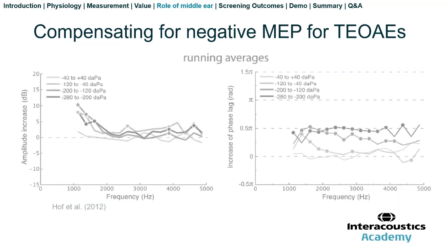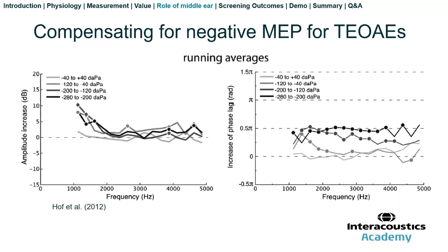Hoff et al. investigated the effects of compensating negative middle ear pressure on transient evoked OAE amplitude and phase, in subjects between half a year and nine years of age. They found that compensating for negative middle ear pressure increased amplitude, phase lag, and improved transient evoked detectability. For ears with middle ear pressure between minus 120 to minus 40 daPa, there was an average increase of around 8 dB near 1 kHz with compensation. For ears with negative pressure between minus 200 to minus 120 daPa, there was a larger increase of about 11 dB near 1 kHz. Below minus 200 daPa, there wasn't much improvement, suggesting the relationship was somewhat asymptotic.